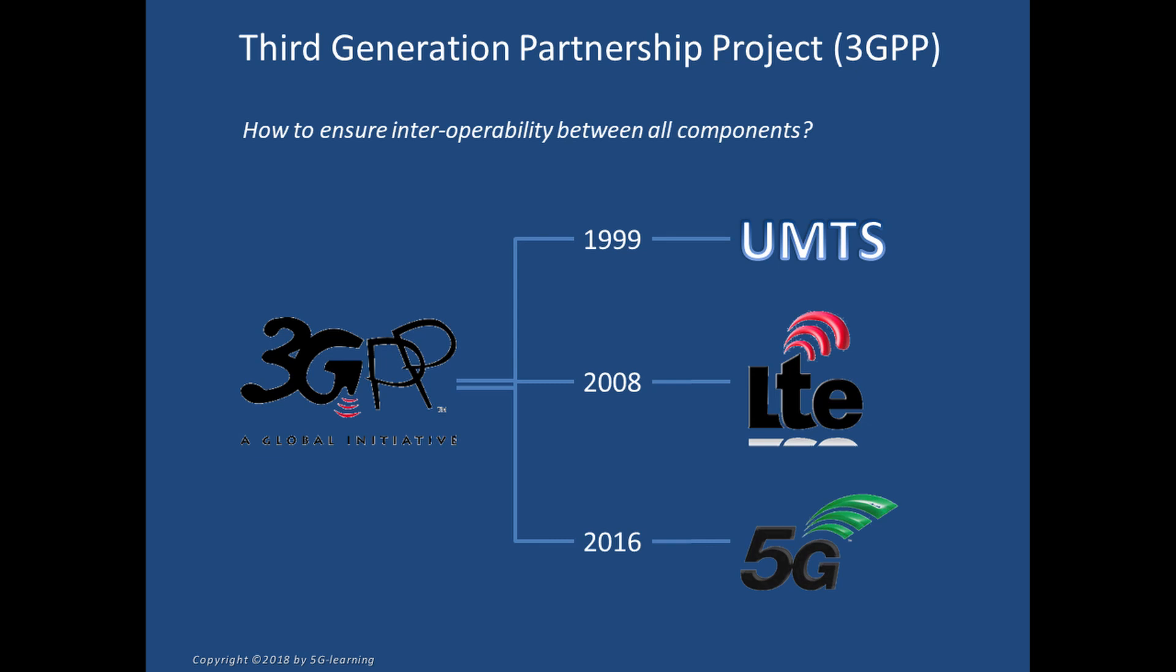3GPP provided the specifications for 3G UMTS and for 4G LTE systems. Since 2016, it works on the development of 5G.